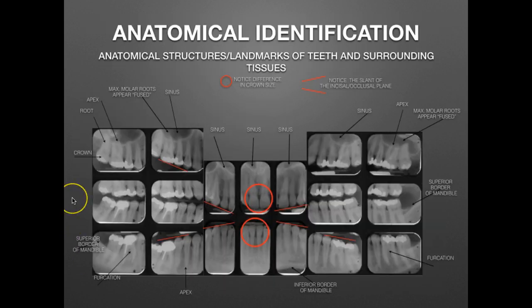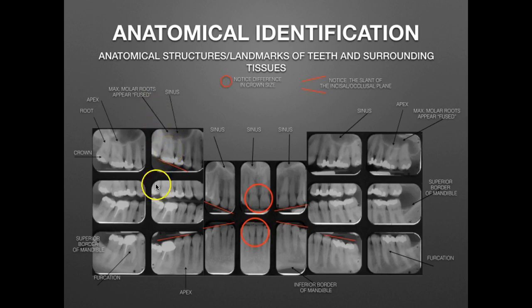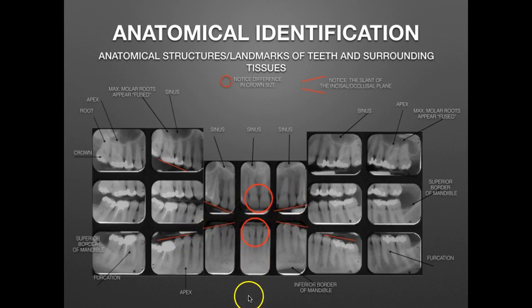Here is a repeat of the anatomical structures and landmarks of the teeth and surrounding tissue. You can see the apex, the furcation — trifurcation or bifurcation — and also the slants of the occlusal and incisal plane. These can all help you in mounting the radiographs correctly.